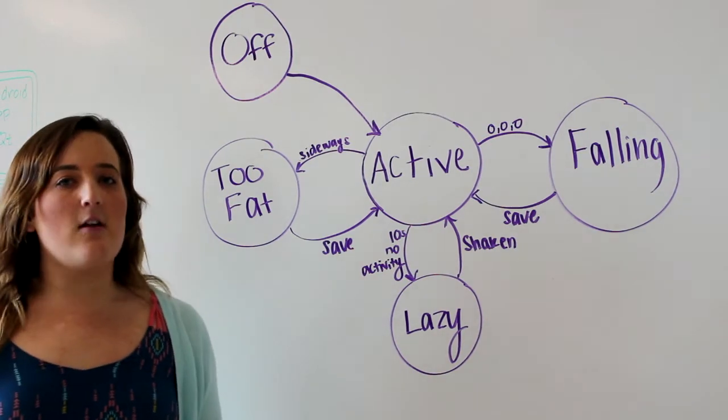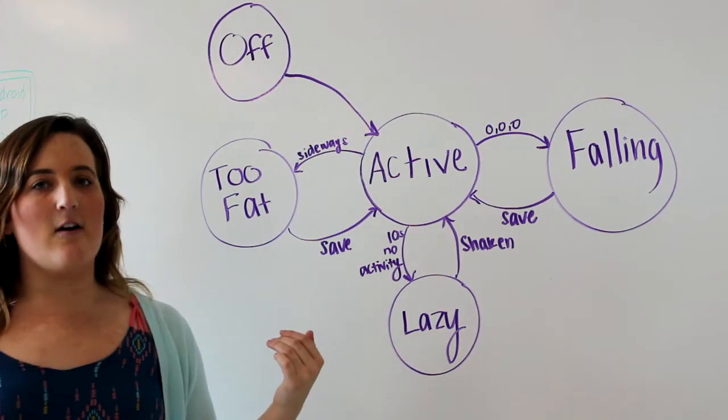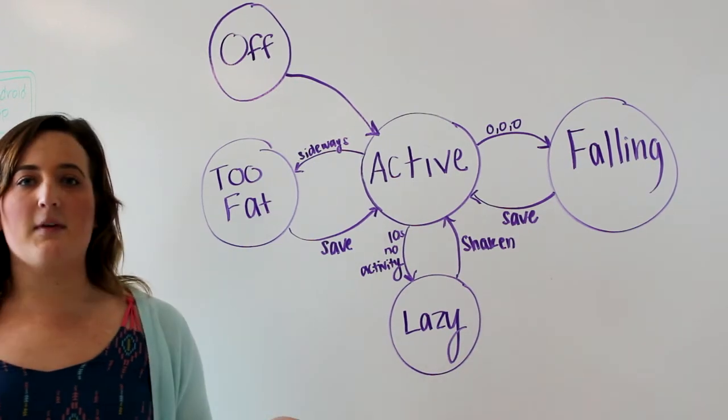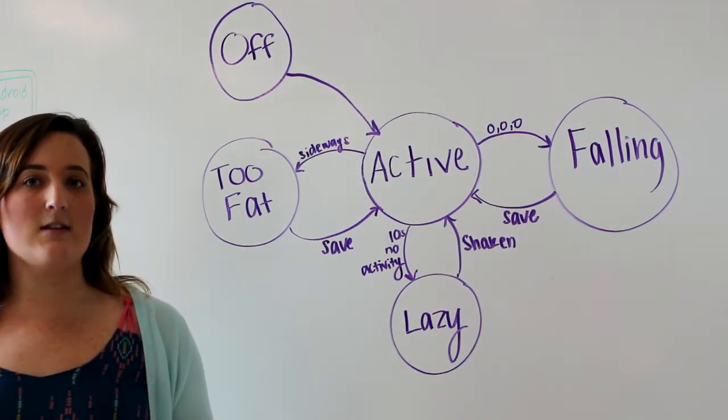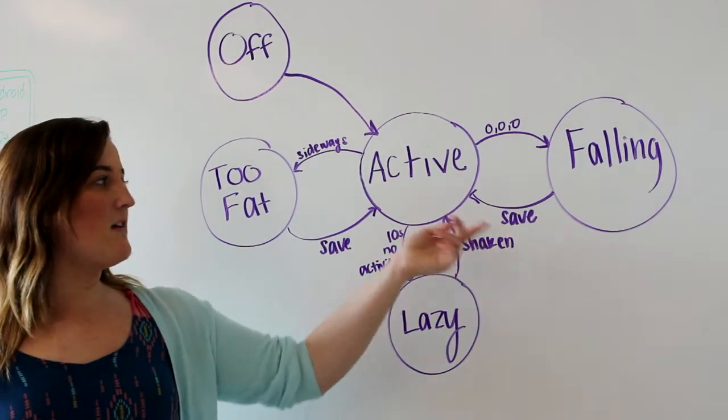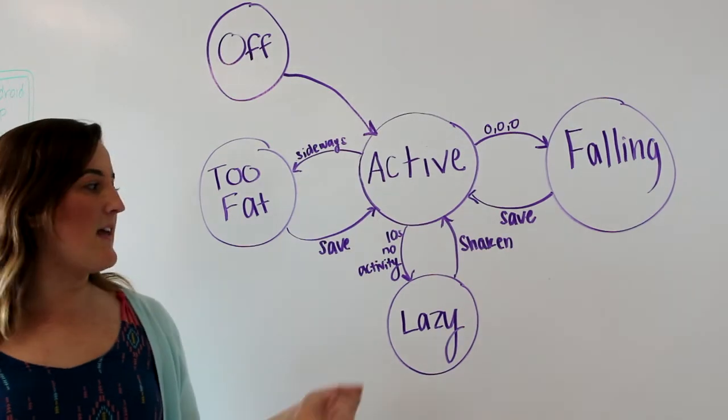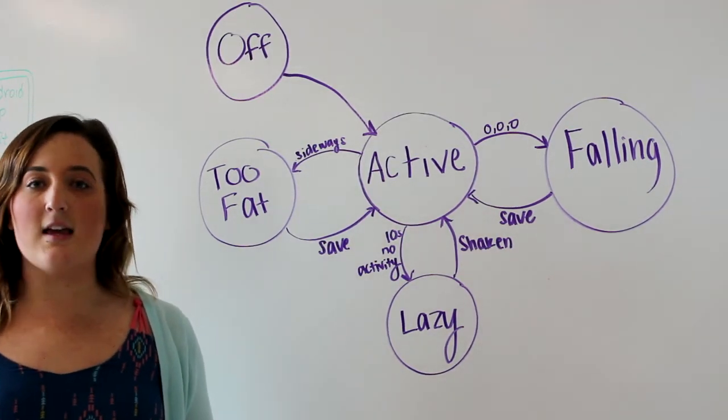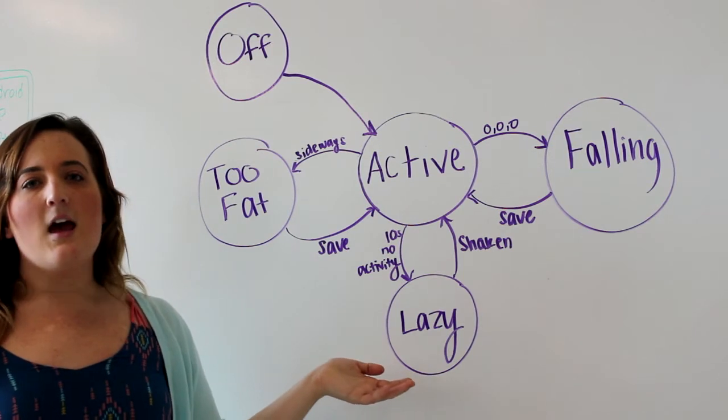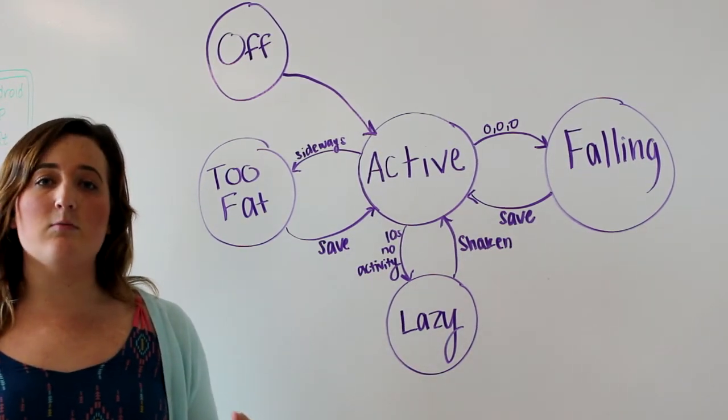In addition, it can move into the falling state. So if your cat has fallen out a window, it will register that and move into the falling state. It will send a notice to the application on your phone, and until you save that cat with that button, it will stay in the falling state. In addition from the active state, if the cat hasn't been active for 10 seconds, it's being lazy. So we move into the lazy state. And we can move back out of the lazy state once the cat is shaken again, once it's moving.